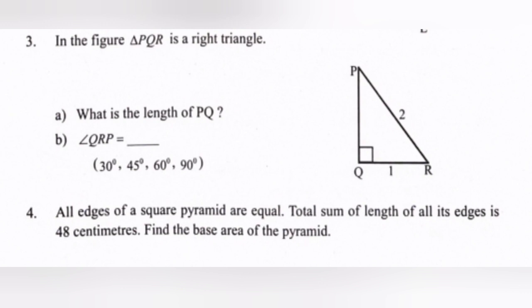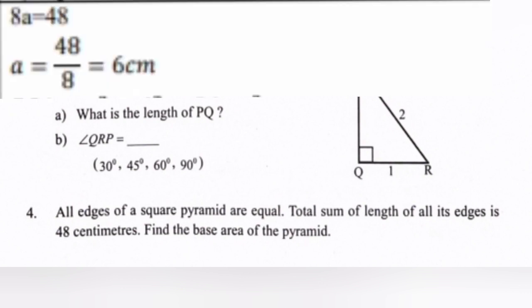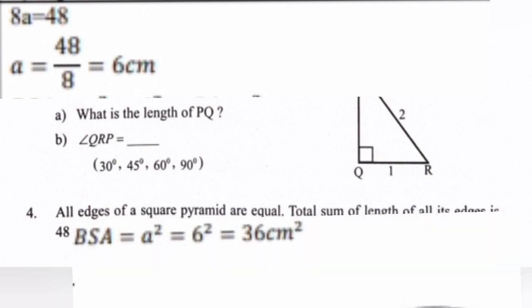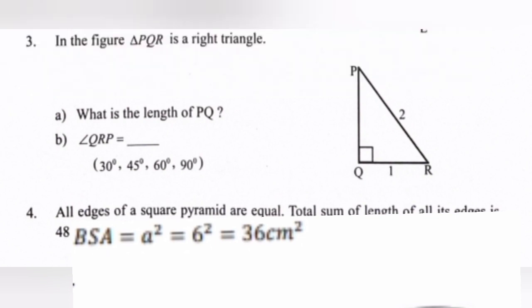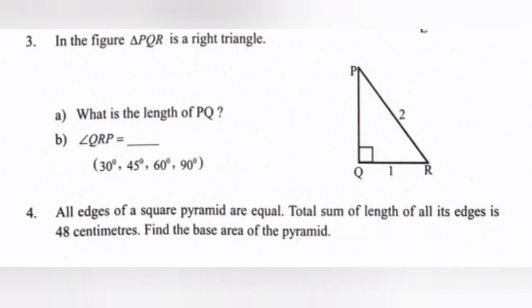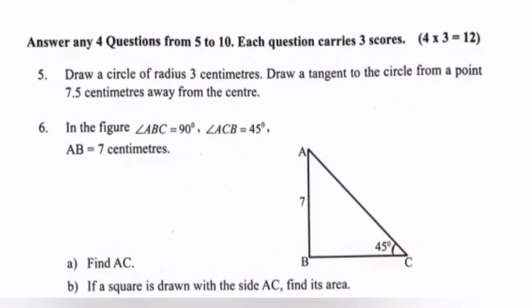Question 4: All edges of a square pyramid are equal and the total sum of the length of all its edges is 48 centimeters. Find the base area of the pyramid. Solution: 8a = 48, so a = 48/8 = 6 cm. The base surface area equals a squared, that is 6 squared equals 36 centimeter square.